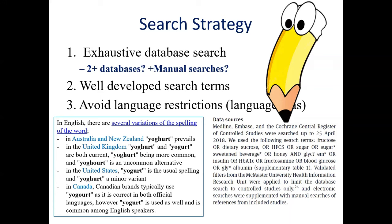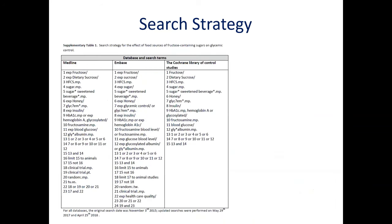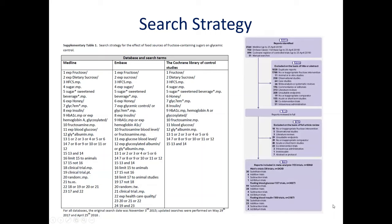To check the search terms, you will likely need to look into the supplement where the full list of search terms is typically presented. The full search strategy in my example is presented in supplementary table one and includes a variety of ways fructose containing sugars and outcomes of interest can be captured. Take a minute to scan the search terms in your SRMA and consider whether they appropriately capture the research question. We can also look at the figure of the literature search to see how studies were excluded and the reasons — in my example, none of the reasons are for language.